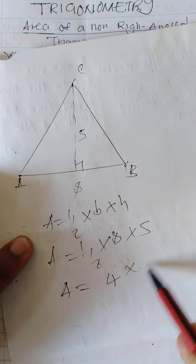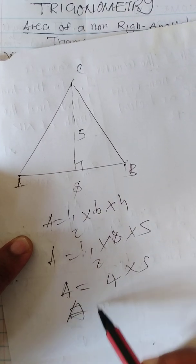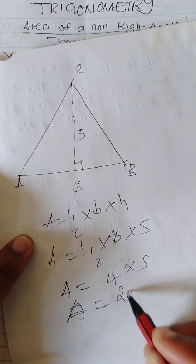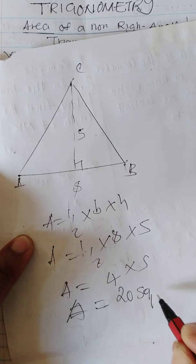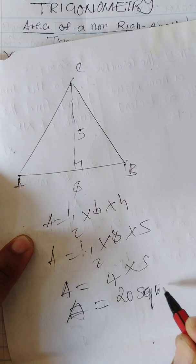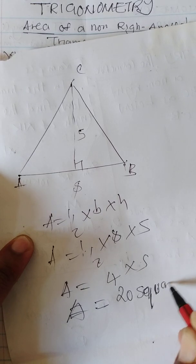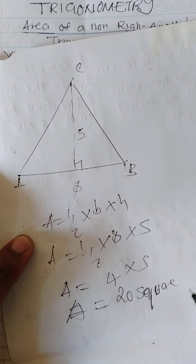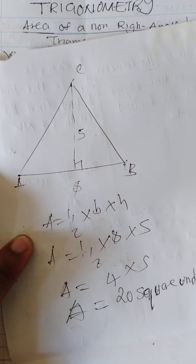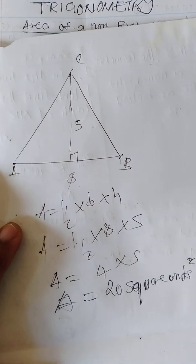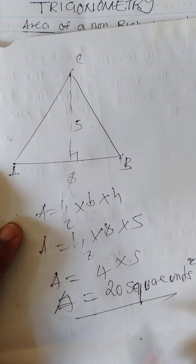This gives you four times five, so your area becomes 20 square units. I hope that is clear; that's how you get square units.